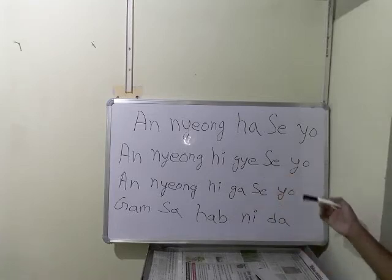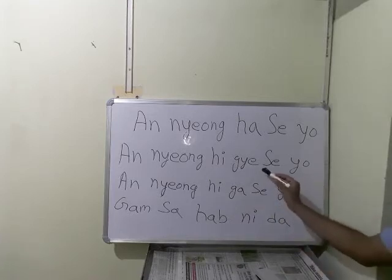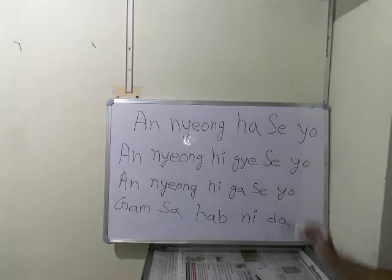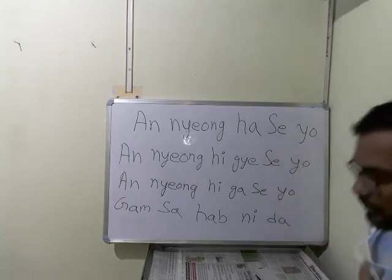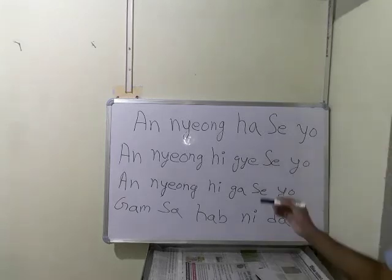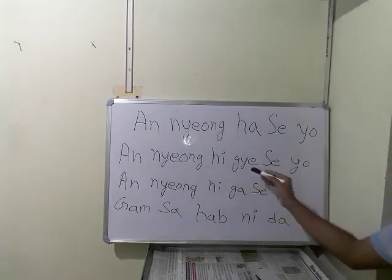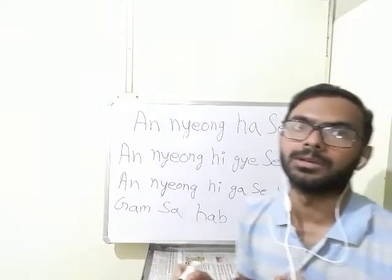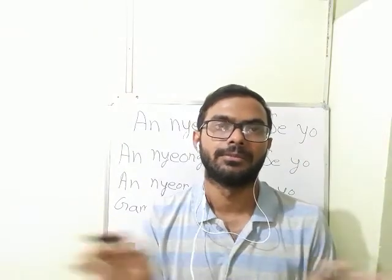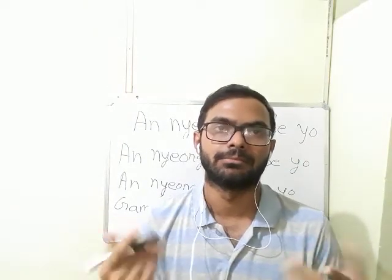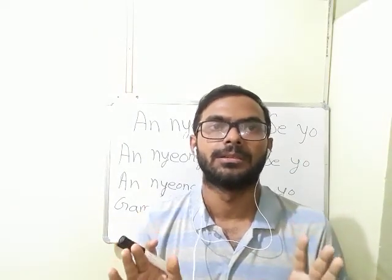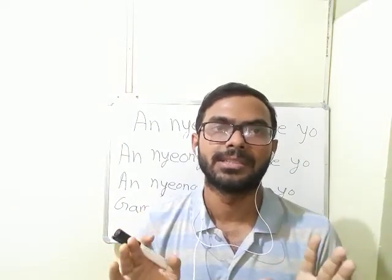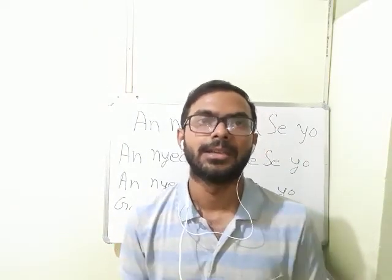If you are talking in a fluent manner, you only hear 'Se yo' at the end — the rest becomes silent. For example, 'Annyong Hi Se yo' — the middle part vanishes and it sounds like just 'Se yo'.